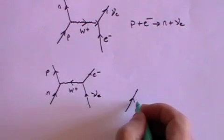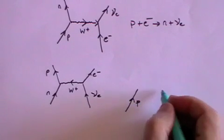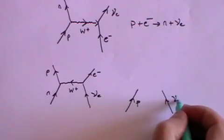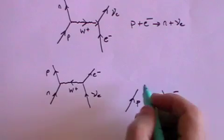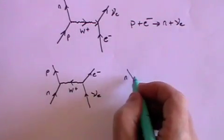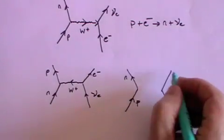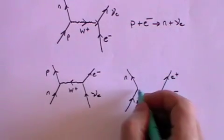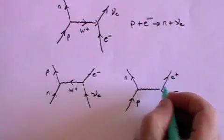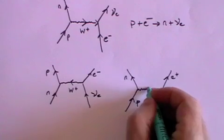Here's another one. A proton and an anti-neutrino this time. Out goes a neutron and a positron. And here is the exchange particle. And that's going to be a W plus.